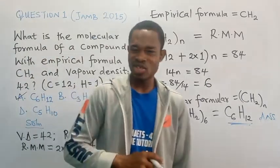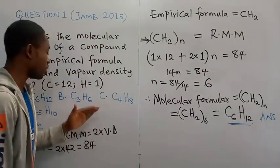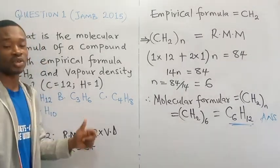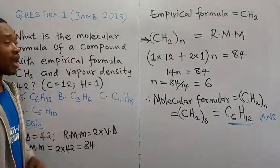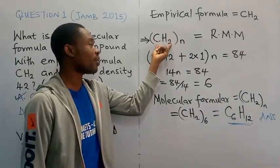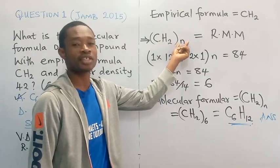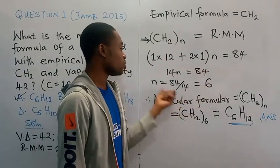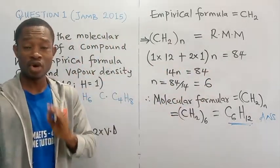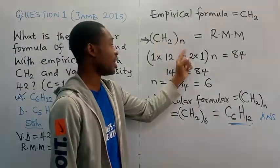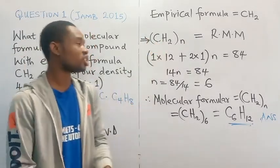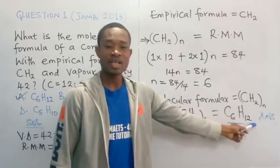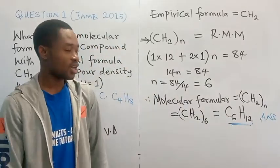As a summary: once you know the vapor density of any substance and are required to get the molecular formula, first obtain the relative molecular mass using RMM = 2 × VD. Then equate it to the relative molecular mass of the empirical formula times an unknown whole number N. Solve for N, then go back to the empirical formula and multiply each number of atoms by that value of N. That is how we got C6H12.